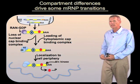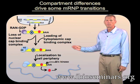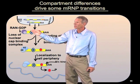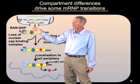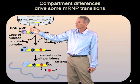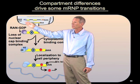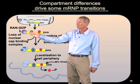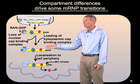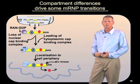Once the mRNA is exported to the cytoplasm, simply being in a different subcellular compartment can promote some transitions in the RNA protein complexes. For example, in the nucleus there is a certain complex that binds to the 5' end called the nuclear cap binding complex. Once the mRNA reaches the cytoplasm, the presence of RAN GDP — a protein-GDP complex at high levels in the cytoplasm, whereas in the nucleus you have a related RAN GTP complex — causes loss of the nuclear cap binding complex and loading of the cytoplasmic cap binding complex, EIF4E and 4G, which promotes translation. This occurs simply because the mRNA is now in a compartment with a different concentration of RAN GDP.